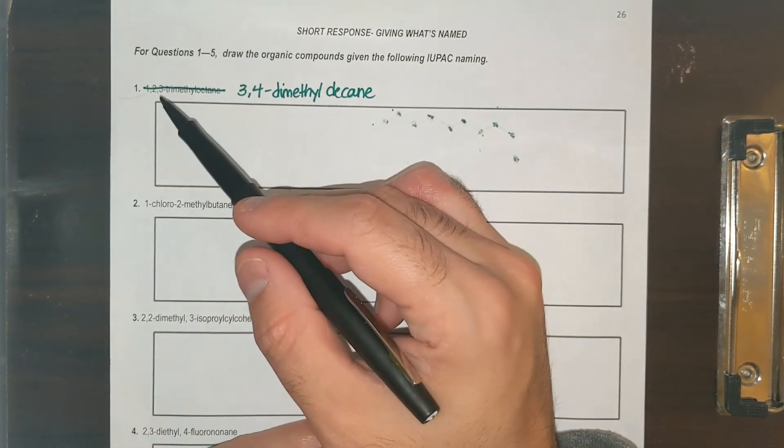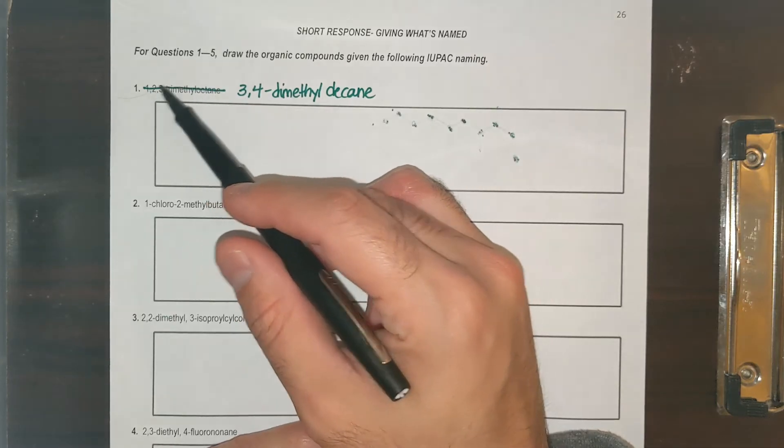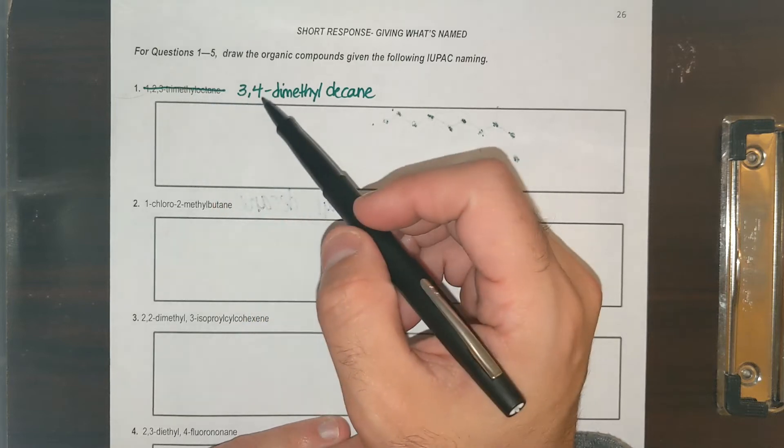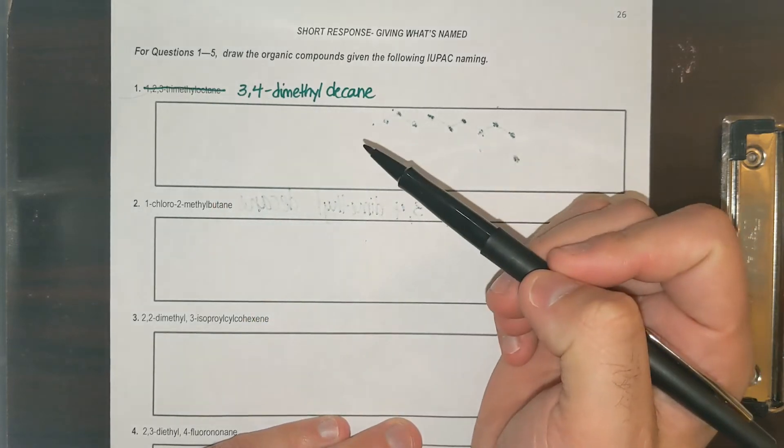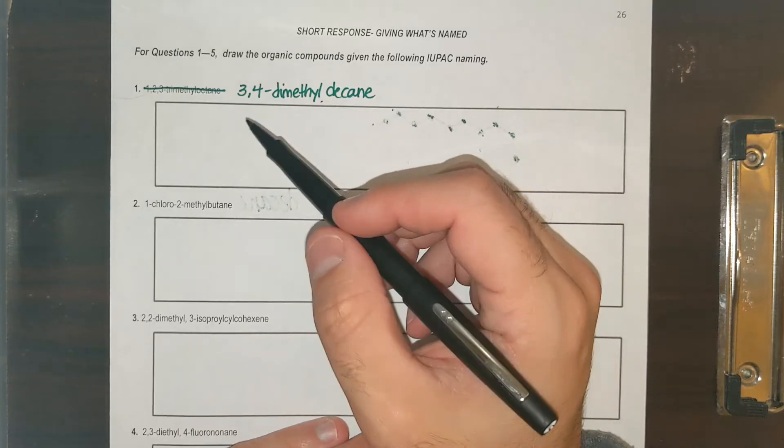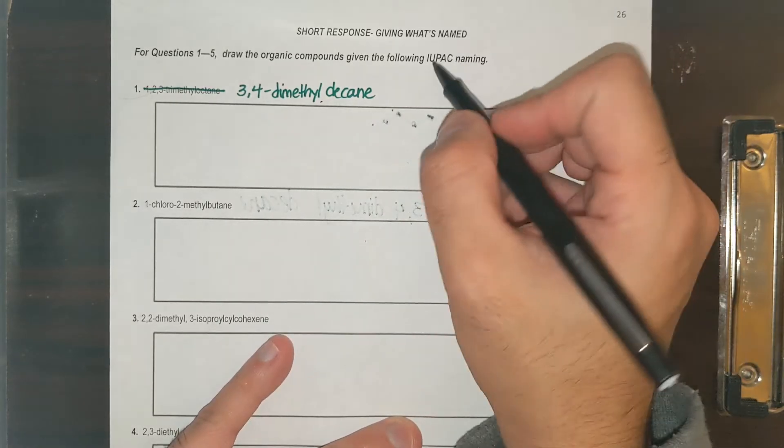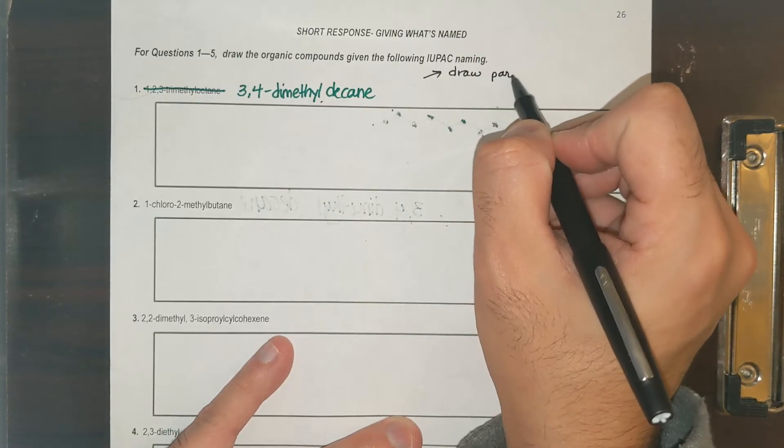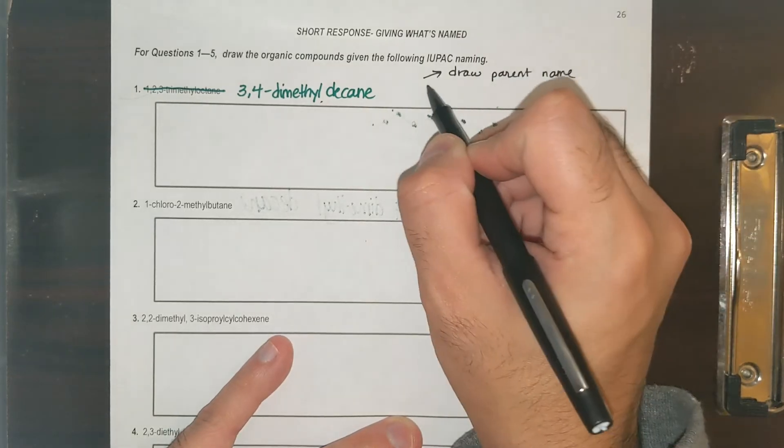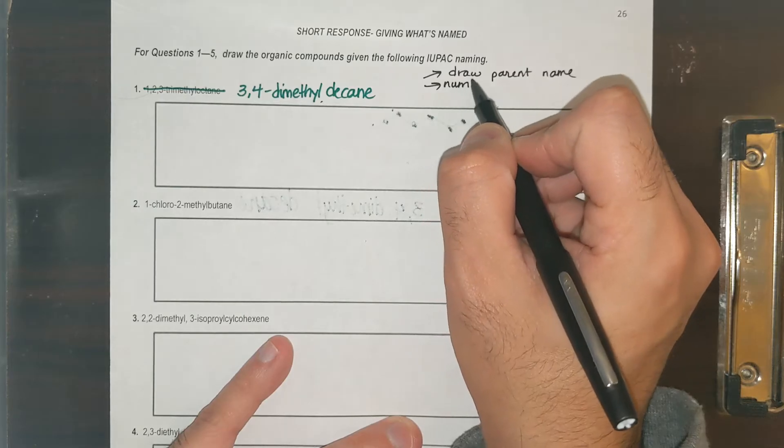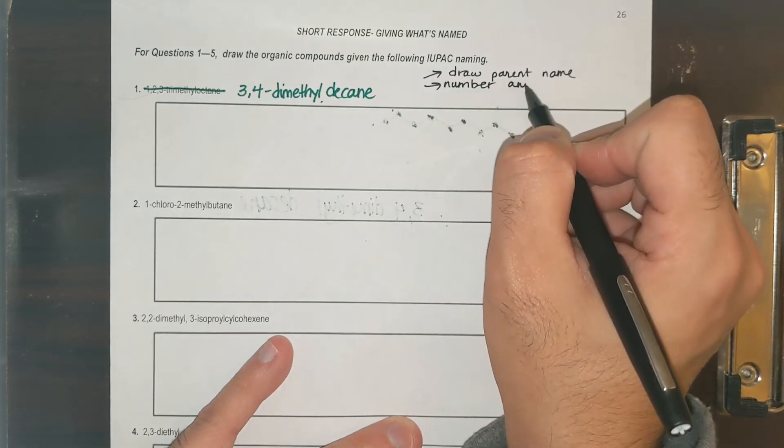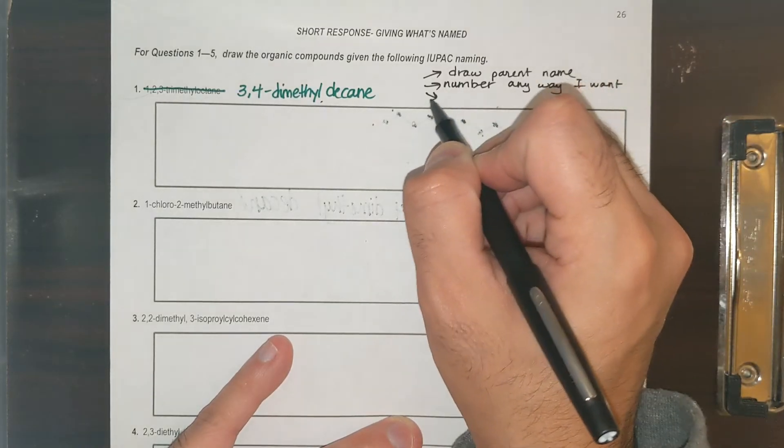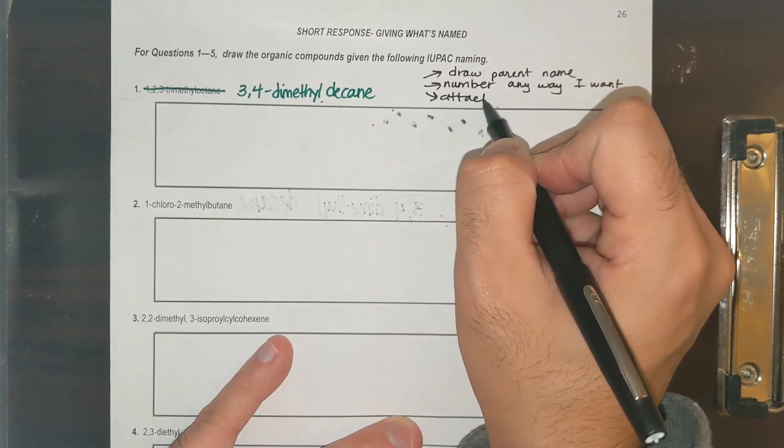Number one, it's named incorrectly. So you're going to cross this out. It's not going to be 1,2,3-trimethyl octane. Cross this out and put 3,4-dimethyl decane. Now if I want to draw, first I draw the parent name. I'm going to number it any way that I want and then attach the substituents.